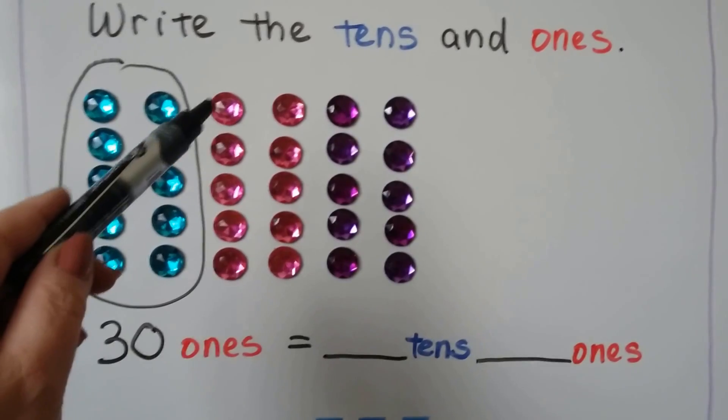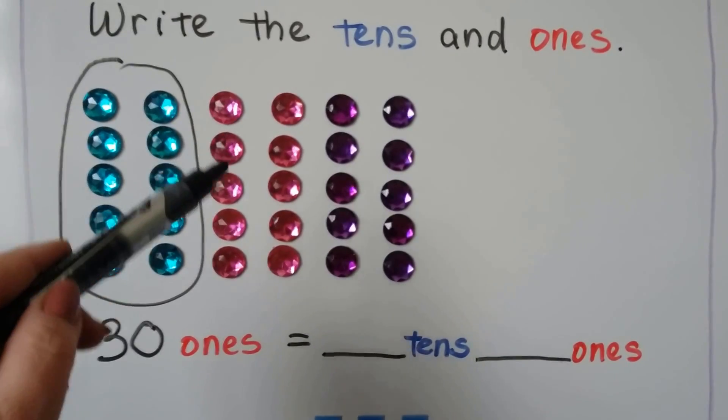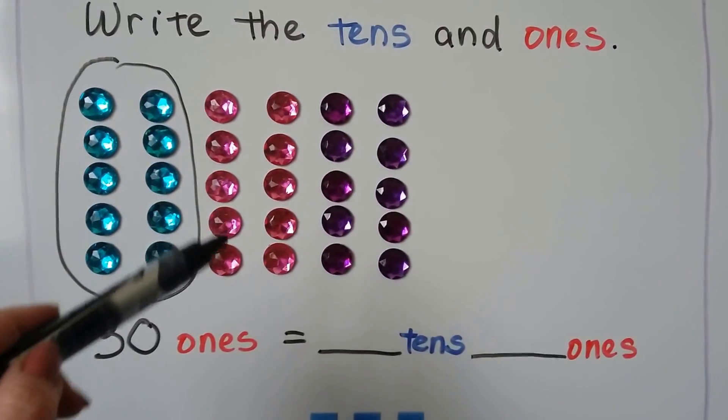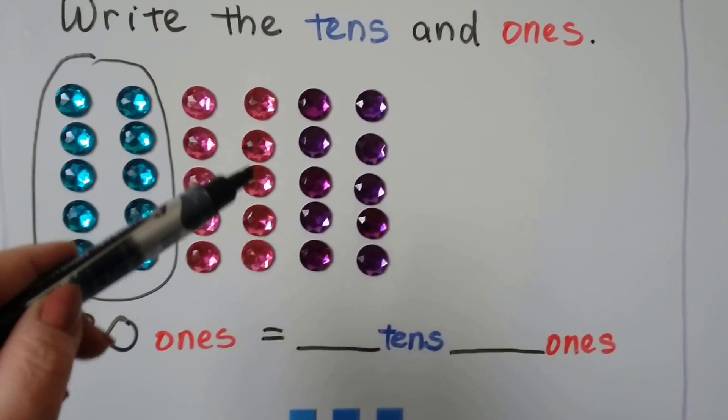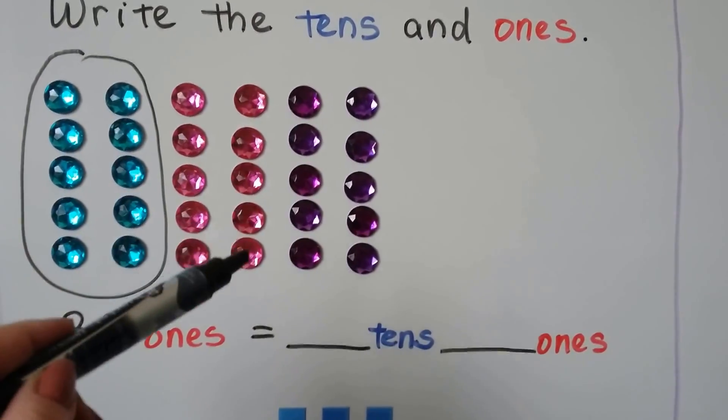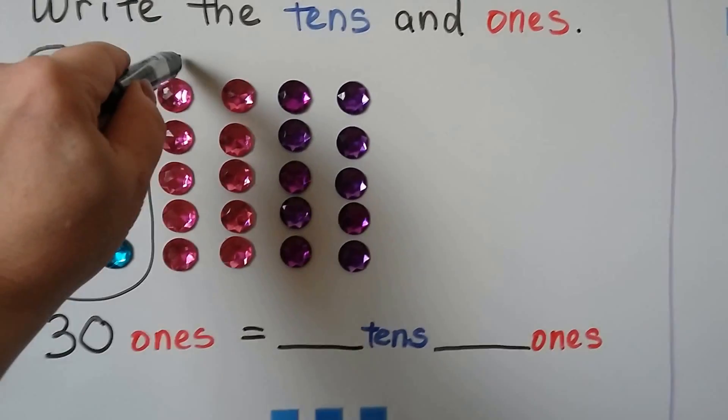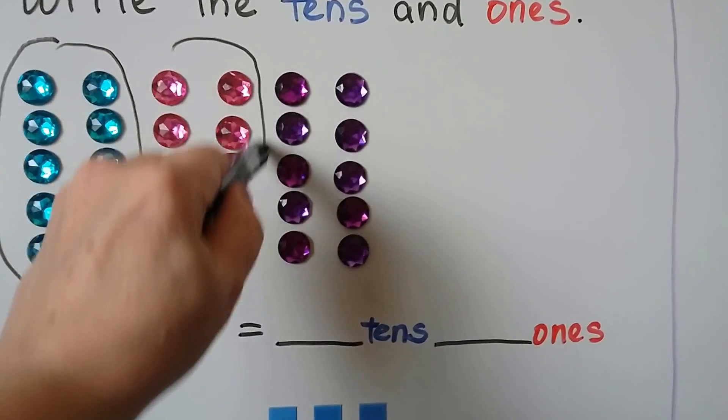And then we have one, two, three, four, five, six, seven, eight, nine, ten. That's another group.